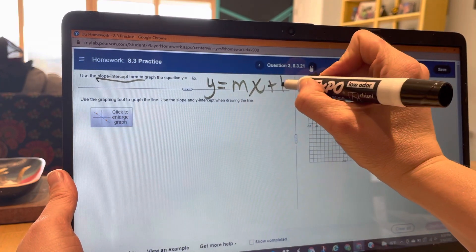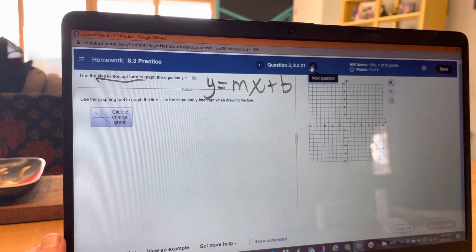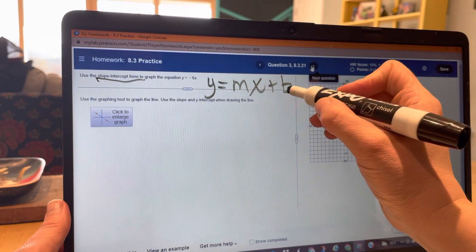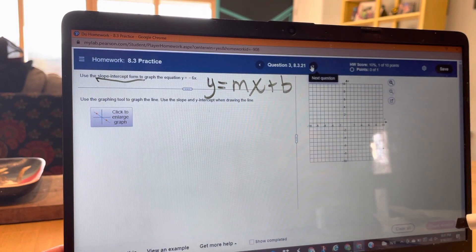Remember, slope-intercept form is y equals mx plus b, where m is our slope and b is our y-intercept.